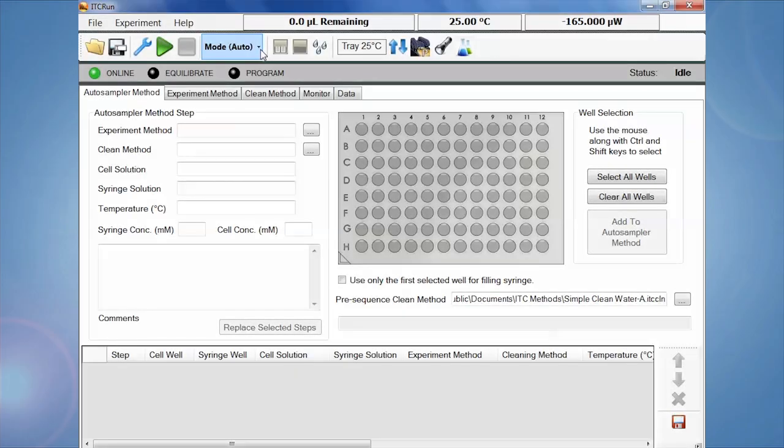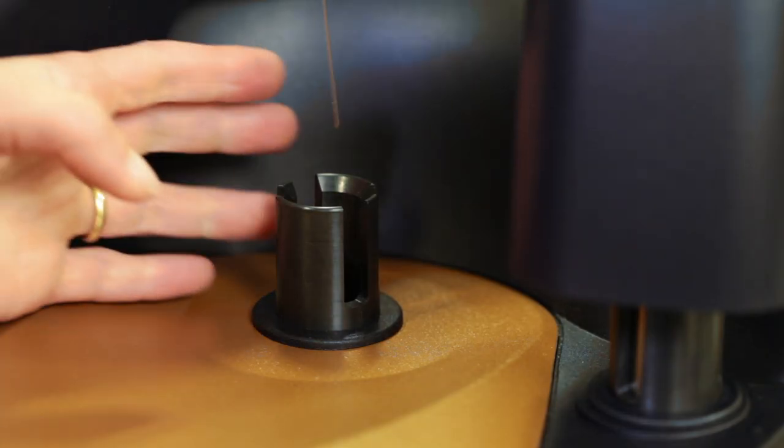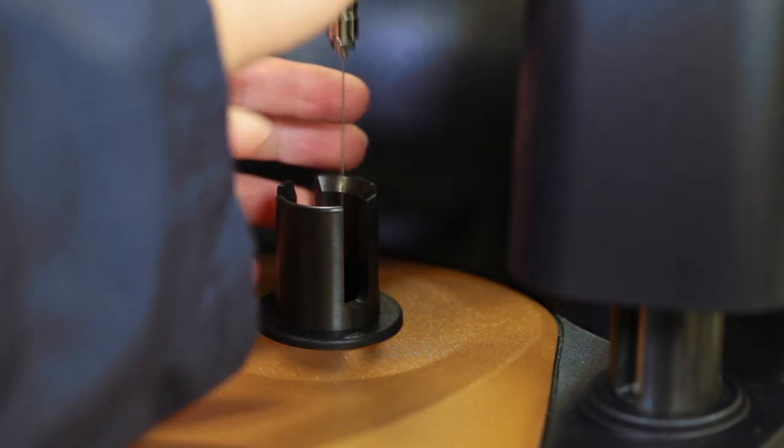The Affinity ITC Auto can easily switch from automated to manual operation. The first step is to change the operation mode in the software. Following this software change, the cell is loaded with the filling syringe.